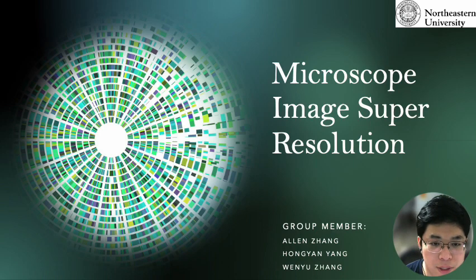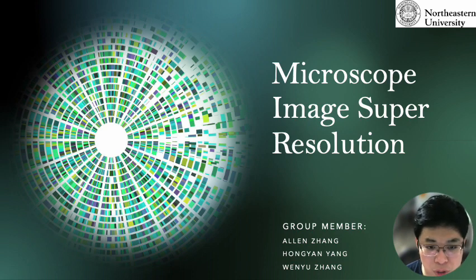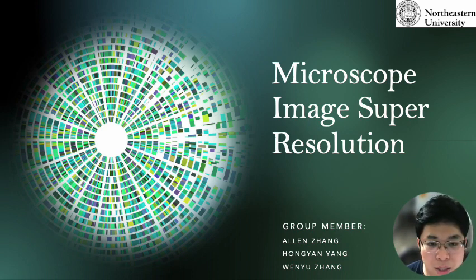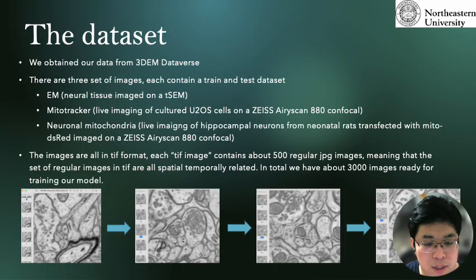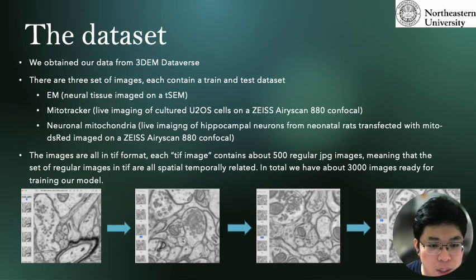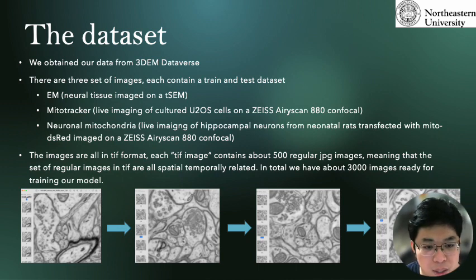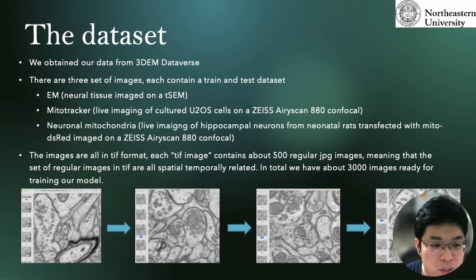Hi everyone. The phase 2 of our team's project will be focused on microscope image super resolution. Our task will be clearly divided into three parts based on their different risk levels. The dataset we will use is the same as phase 1 — around 3,000 images for training and testing, all microscope images of neural tissues.